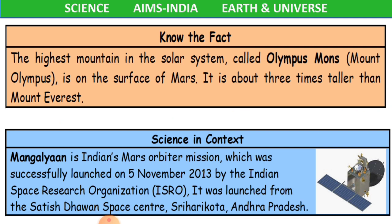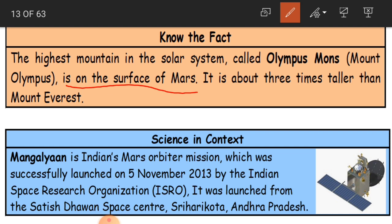The highest mountain in the solar system, called Olympus Mons, is on the surface of Mars. It is about three times taller than Mount Everest, which is the highest mountain on Earth.